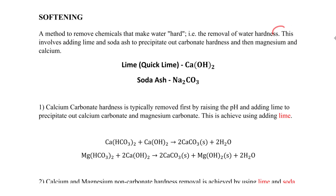Softening involves adding lime and soda ash. What we do is precipitate out carbonate hardness first, and this is generally done with lime — we add lime in our rapid mix basin to remove carbonate hardness. Then we precipitate out the magnesium and calcium using a combination of lime and soda ash. Lime is Ca(OH)₂ and soda ash is sodium carbonate (Na₂CO₃).